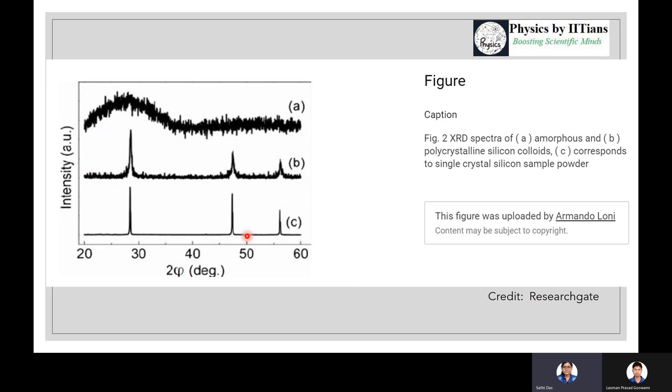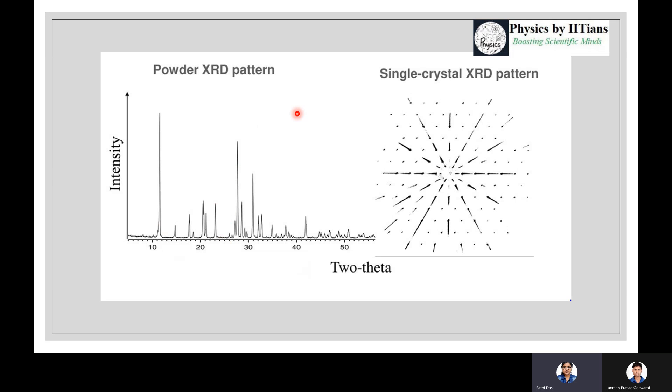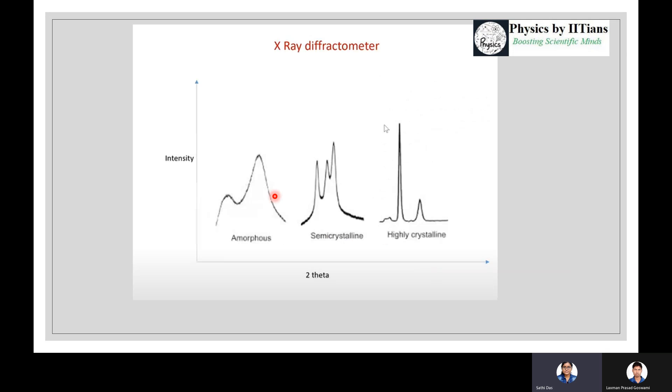Look here - these are three different figures I have taken from Research Gate. This is the XRD spectra of amorphous, polycrystalline, and single crystal silicon sample powder. This is the peak for single crystal - look, intense and sharp peaks. For polycrystalline, there are not sharply intense but broader bands and spectra. For the case of amorphous, the spectra are totally non-sharp and totally broader.